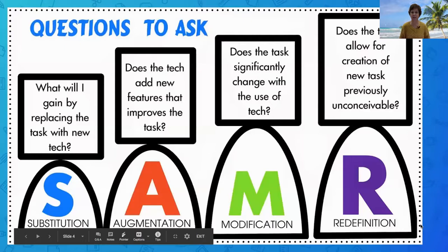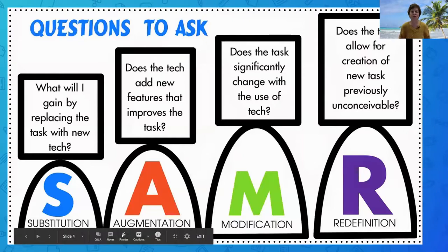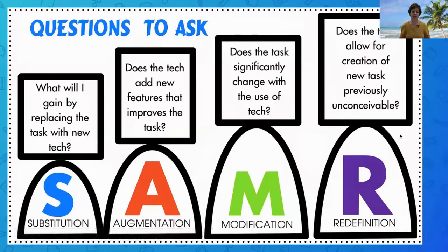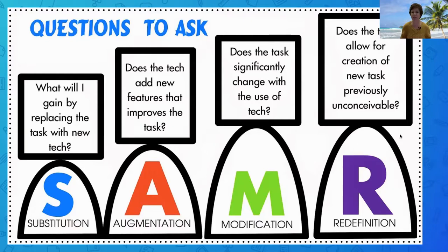Here's another way to look at the SAMR model using guiding questions. At the substitution level, ask yourself: what will I gain by replacing the task with technology — do I save time, what is my benefit? At augmentation, ask: does the technology tool add new features that actually improve the task? At modification, ask: does the task significantly change with the use of technology? And at redefinition, ask: does the technology allow for creation of a new task previously unconceivable?